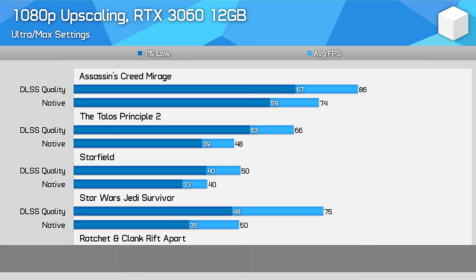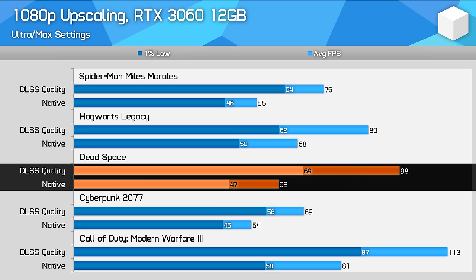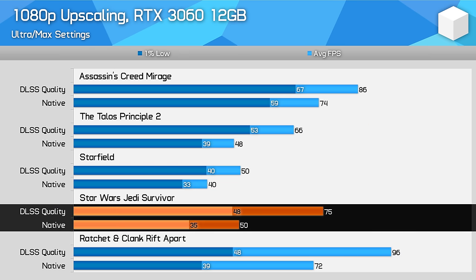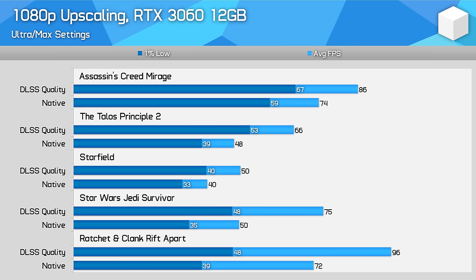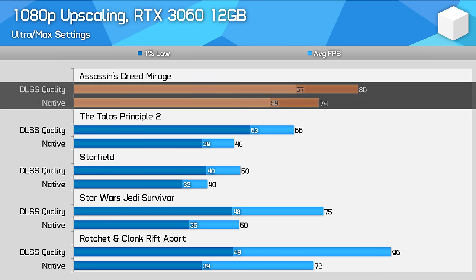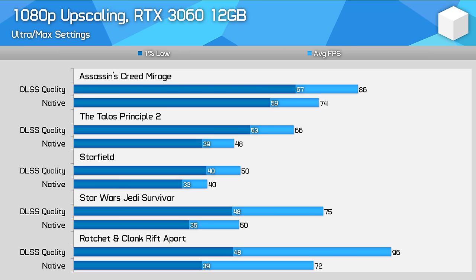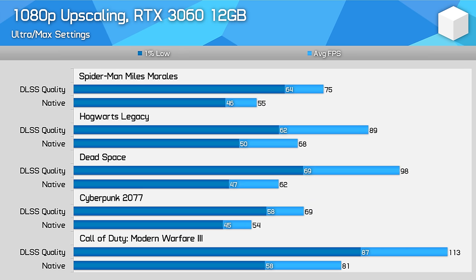There are some outliers: Dead Space saw a huge 59% performance uplift using DLSS quality, and Jedi Survivor also surpassed the 50% barrier. On the other end, Assassin's Creed Mirage only saw a 16% improvement and Starfield just 25%. On average, DLSS quality across these 10 games delivered a 36% performance improvement compared to native rendering at 1080p on the RTX 3060 at ultra settings, along with a 32% improvement to 1% lows. Using this average, a game running at 60 FPS native improves to 82 FPS with DLSS quality; a 40 FPS baseline would end up around 54 FPS.